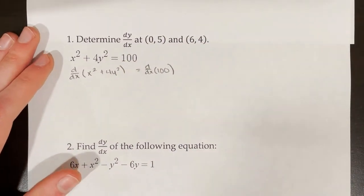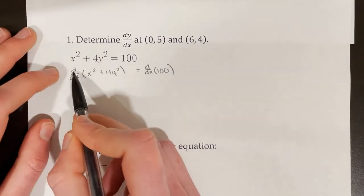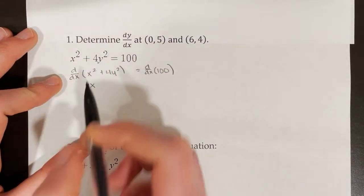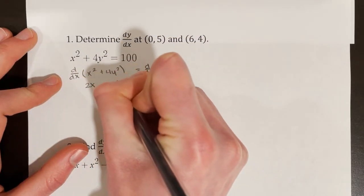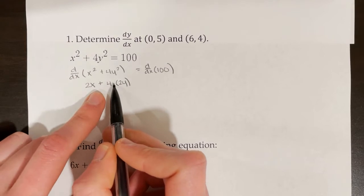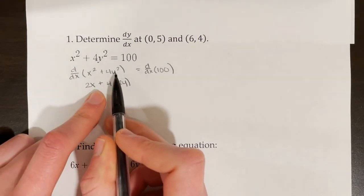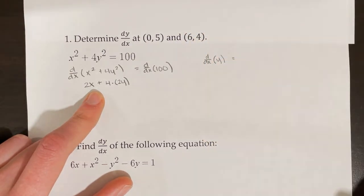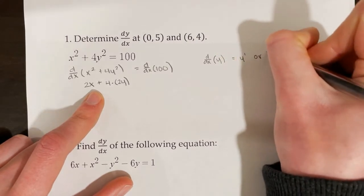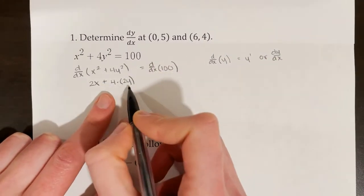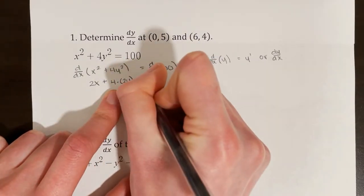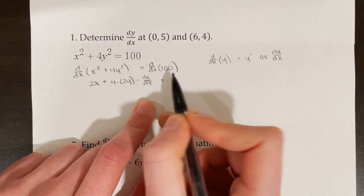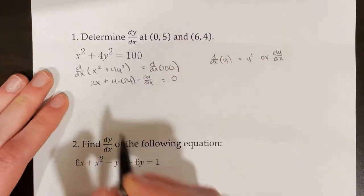Now I need to go through and take the derivative of each term. Taking the derivative with respect to x of x squared gives 2x. For 4y squared, it will be 4 times 2y. But there's something else we need to do whenever we have a y in the term: when taking d/dx of a y term, we must also multiply by dy/dx or y prime. So whenever you see a y in the term you're differentiating, you need to multiply it by dy/dx. And the derivative with respect to x of 100 is simply 0.